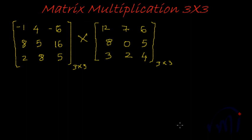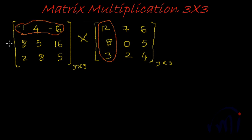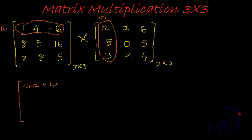The first element of the product is arrived at by multiplying row 1 with column 1 — it is a sum product of row 1 and column 1. So the first element in the product would be equal to minus 1 into 12, plus 4 into 8, plus minus 6 into 3.